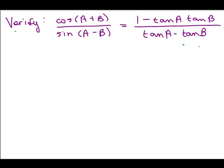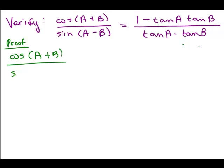Let's do a proof to verify this identity. One way of verifying an identity is you start with one side and you manipulate it using other identities and arithmetic and algebra until it looks like the other side of the equation. I'm going to begin with the left hand side because this looks more complicated. I think it's going to be easier to use the formulas for the cosine of a sum and the sine of a difference. So I'm going to start out with cosine of A plus B over the sine of A minus B and use those identities to get started.